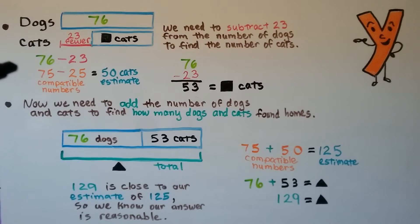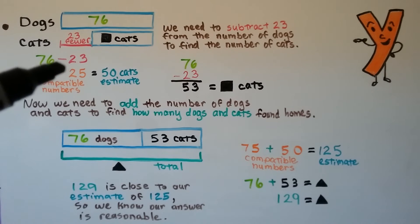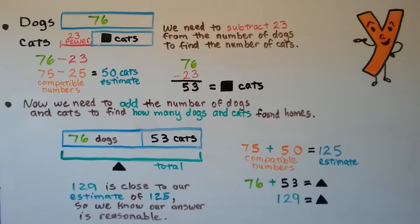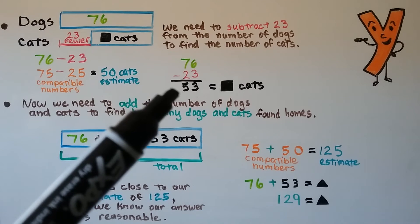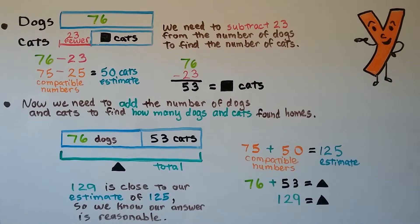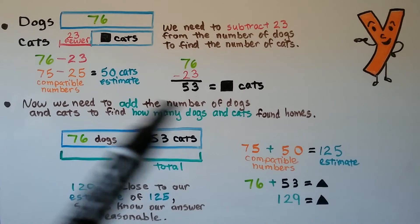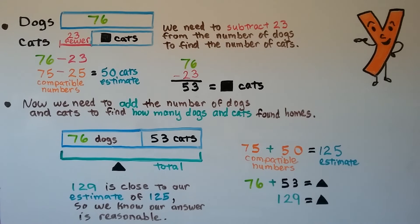We can make an estimate by using compatible numbers: 76 is close to 75 and 23 is close to 25. We subtract 75 minus 25, and that's equal to about 50 cats for our estimate. We do 76 minus 23 and get 53 cats, which is going to equal the black square — the unknown amount of cats.